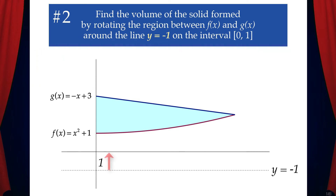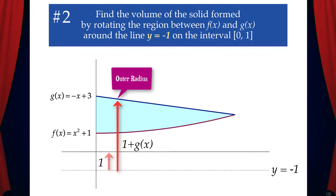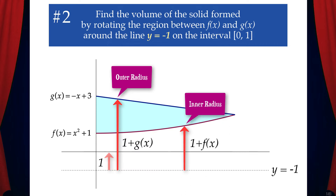The distance from y equals negative 1 to the x-axis is 1. That means the outer radius is 1 plus g of x, and the inner radius is 1 plus f of x.